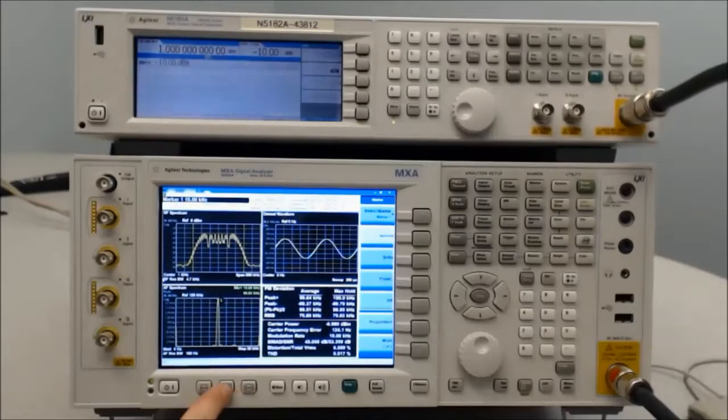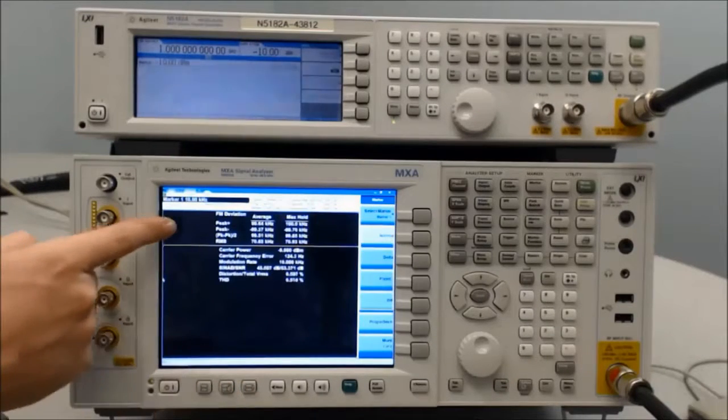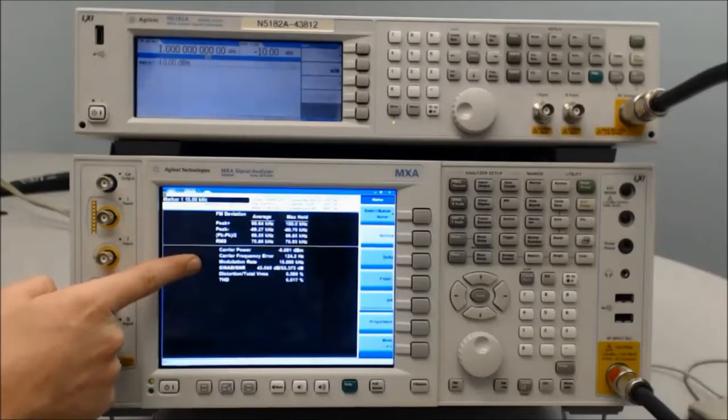In the following window, this is shown numerically, the FM deviation on top and the modulation rate on the bottom.